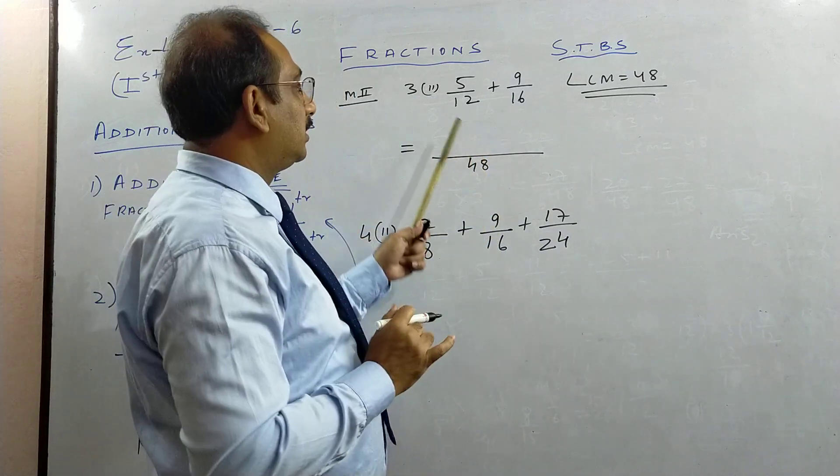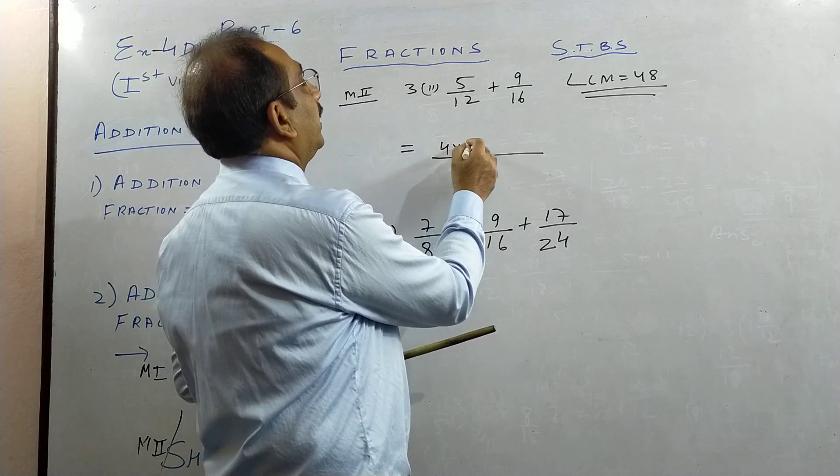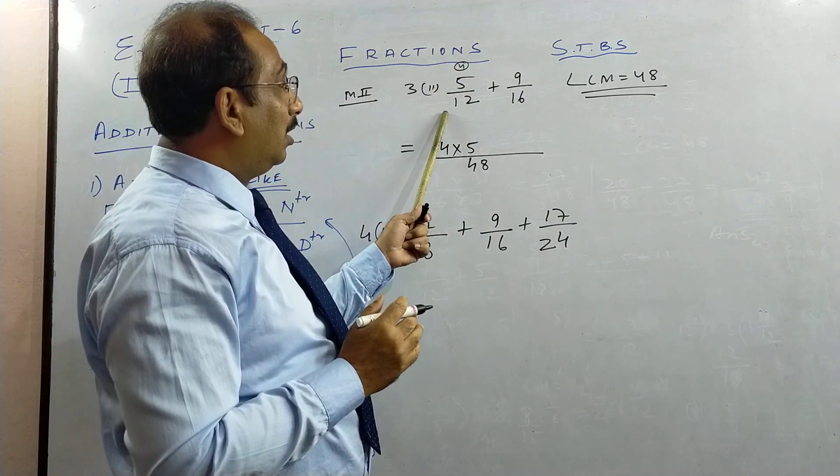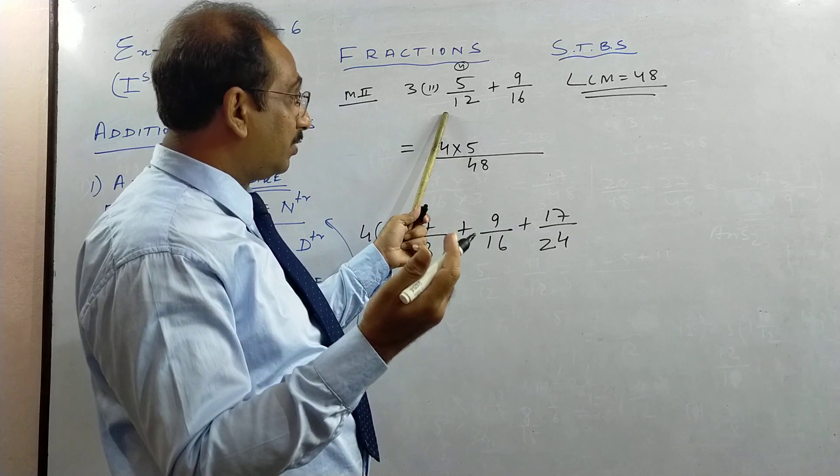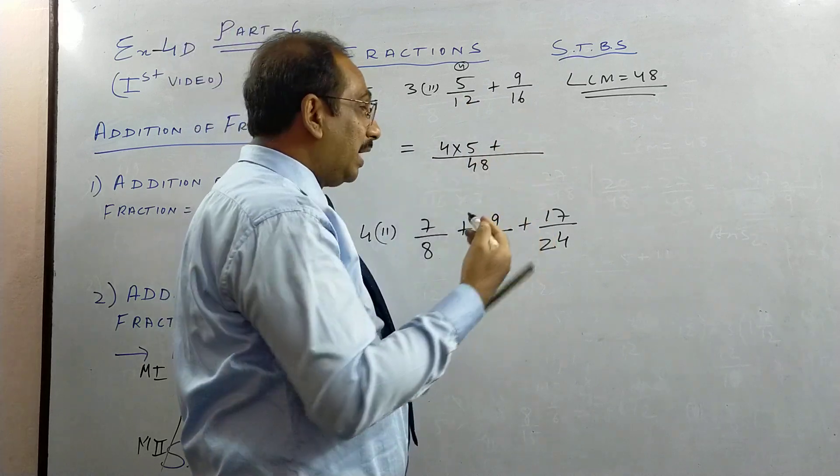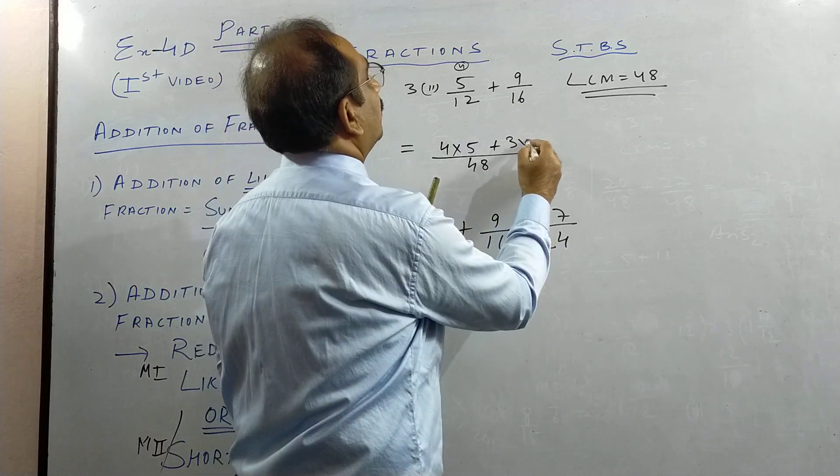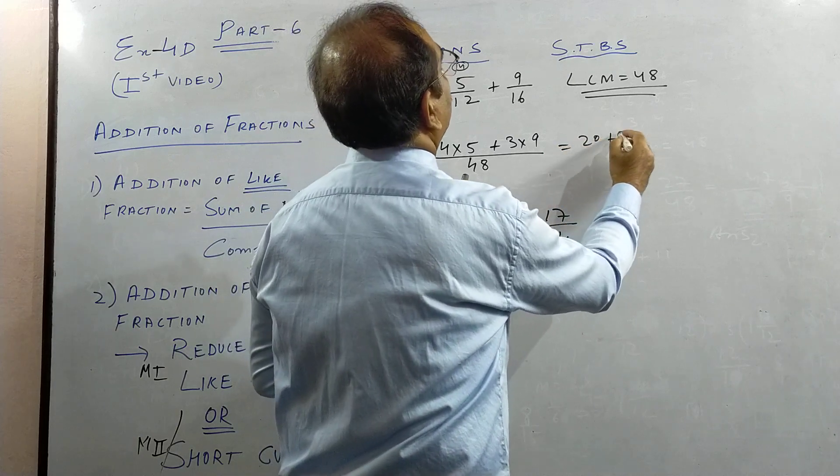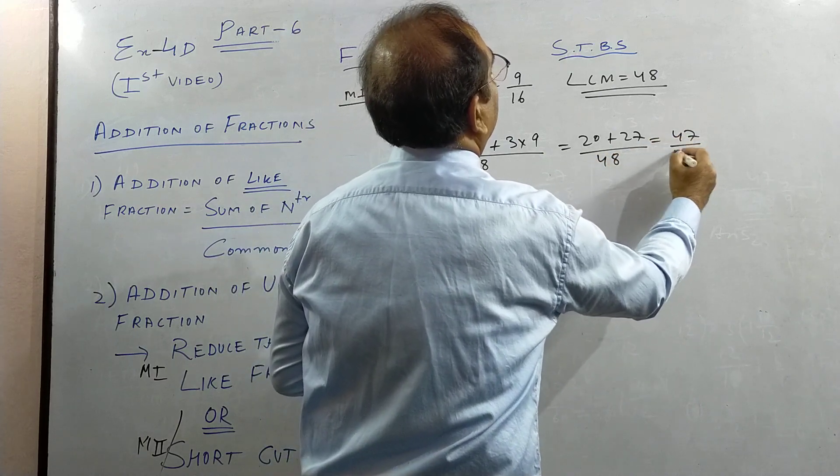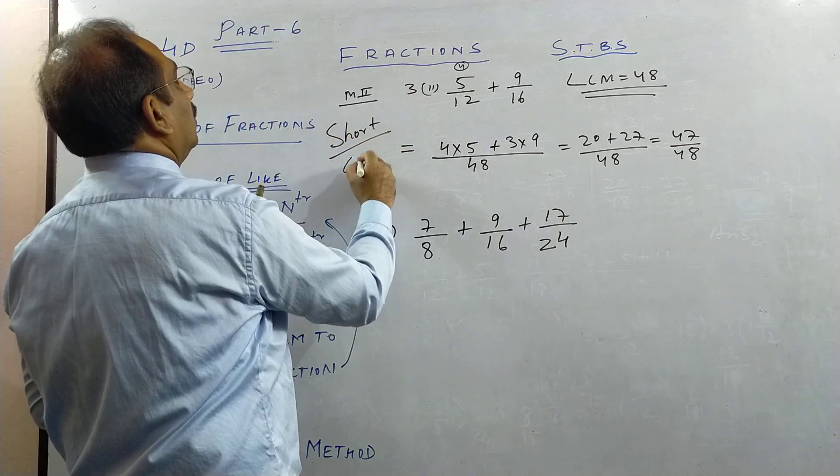Like before, you find the LCM. So I showed you LCM of these 2 is 48. Take the common LCM. Now see, you should know tables very nicely. 12, how many times it goes in 48? 12 fours are 48. So multiply this by 4. 12 times 4 gives you 48, multiply 4 with 5. 16, how many times when you multiply? 16 times 3 is 48. So this will be multiplied with 3. So you get 4 times 5 is 20, 3 times 9 is 27. So you get the same answer. This is my method 2, which is in the book called Shortcut Method.